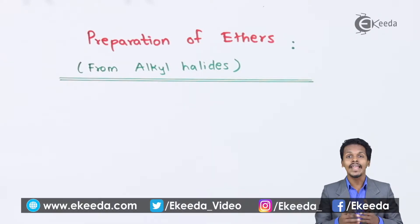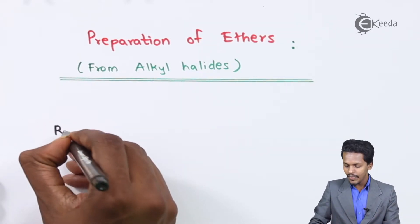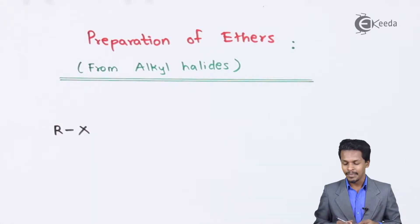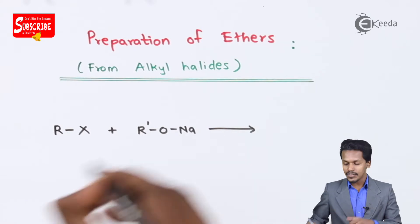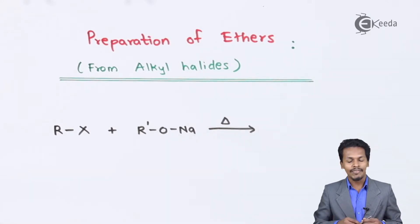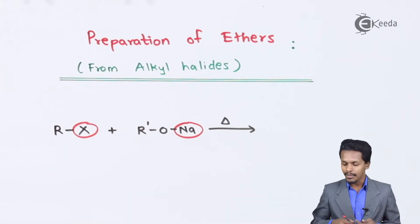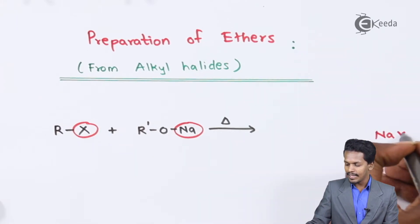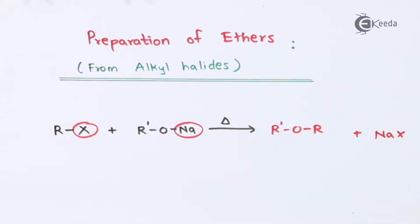In this topic we are going to talk about how we can convert an alkyl halide to ether. The general form of this reaction is: if you have an alkyl halide represented by RX, the reaction should be with sodium alkoxide, represented as R'ONa. The reaction proceeds at a particular temperature and the product we get is ether. The byproduct is NaX — sodium along with the halogen atom — and the rest is R'OR, which is nothing but ether.